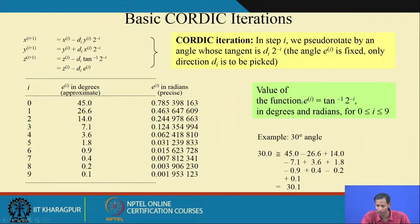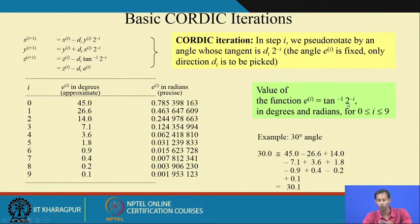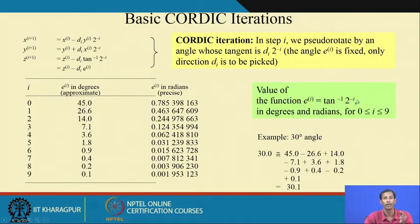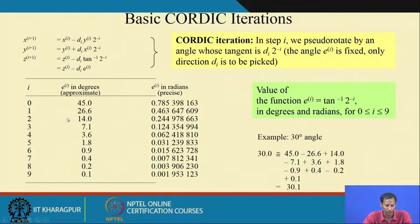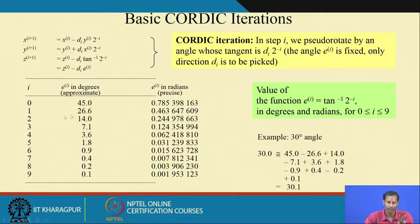Now, how we can calculate the predefined values of the angle? From the beginning we are using this particular set where tan of alpha_i depends on 2 to the power minus i — that is 2 to the power 0, then 2 to the power minus 1, then 2 to the power minus 2, minus 3, minus 4, and so on. The corresponding tan inverse values are: tan inverse of 1 equals 45 degrees, tan inverse of 0.5 equals 26.6 degrees. These are the predefined elementary angles which we store to calculate any value of theta.